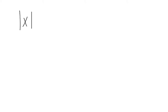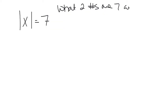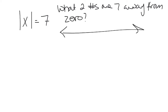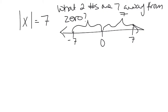When solving an equation like |x| = 7, we're asking: what number is seven units away from zero? On the number line you can see there are two answers — positive seven and negative seven, both seven units from zero. So x equals seven and negative seven.